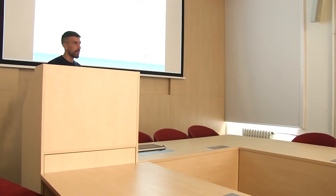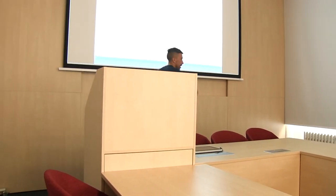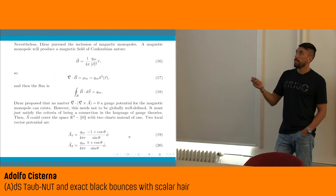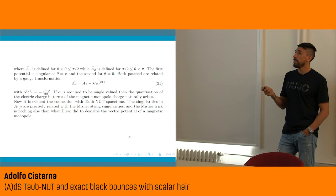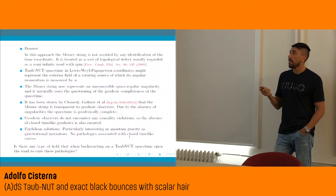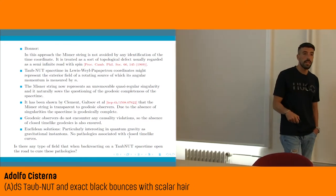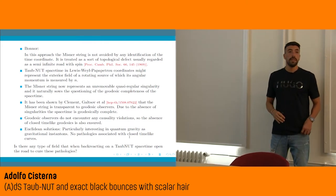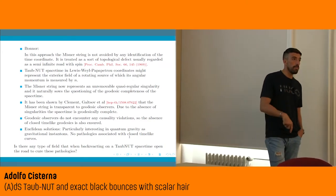So we are going to continue where we stopped before in the morning. We stopped here — we finished with explaining a little bit the Dirac magnetic monopole, and we more or less understood how much it is in connection with the Taub-NUT spacetime. So basically what Misner did to try to avoid this axis of symmetry, which is pathological, is pretty much based on what Dirac did to define the vector potential of a magnetic monopole.